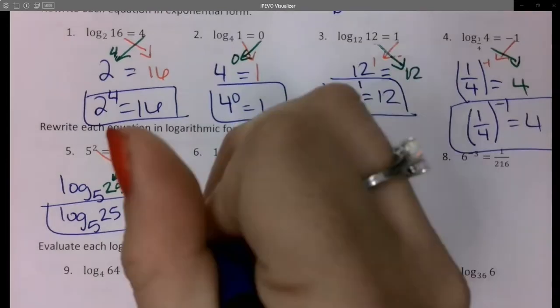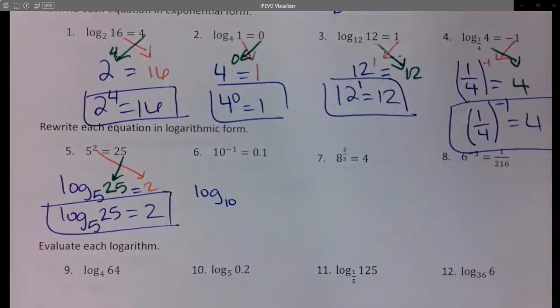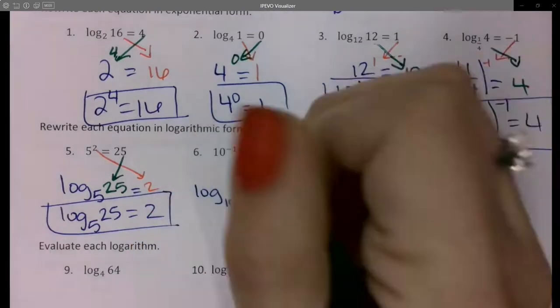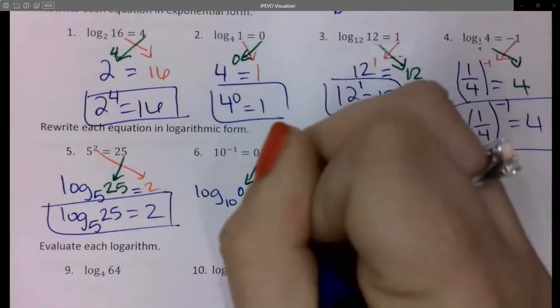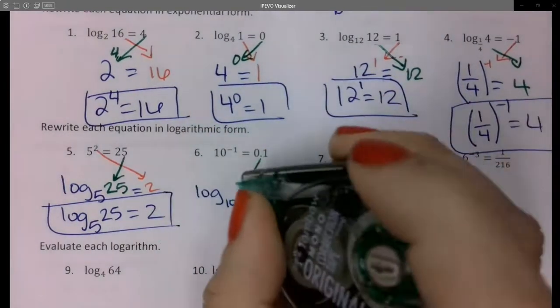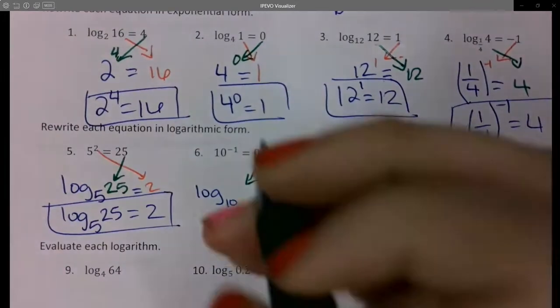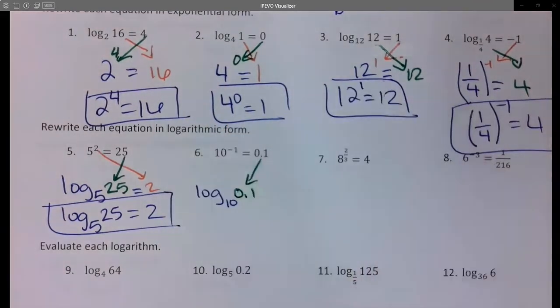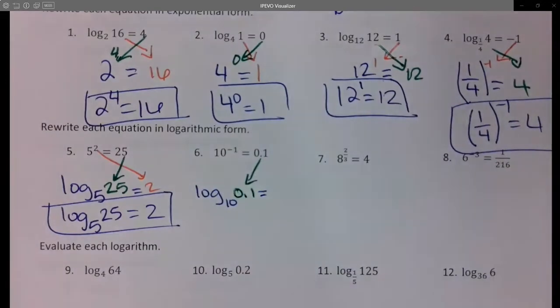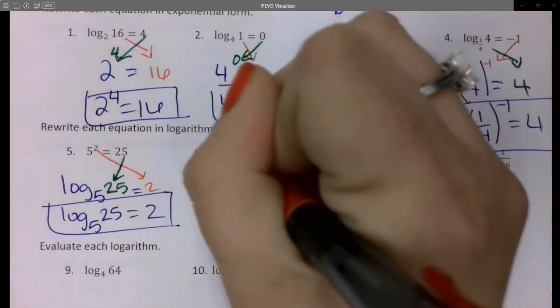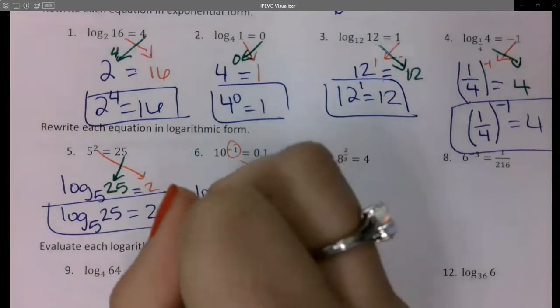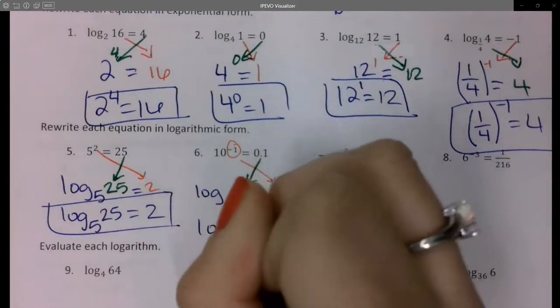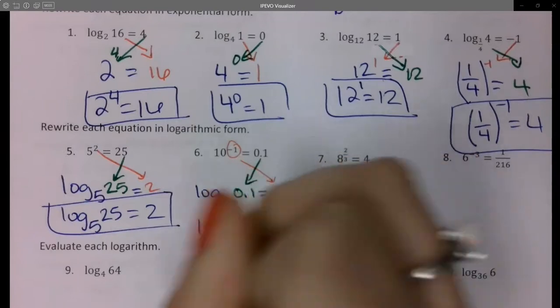Then over here I'm going to have log base 10. This goes next to the word log base 10, this goes next to the word log. So 0.1. Log base 10 of 0.1 and then the exponent negative 1. So I'm going to write log base 10 of 0.1 equals negative 1.